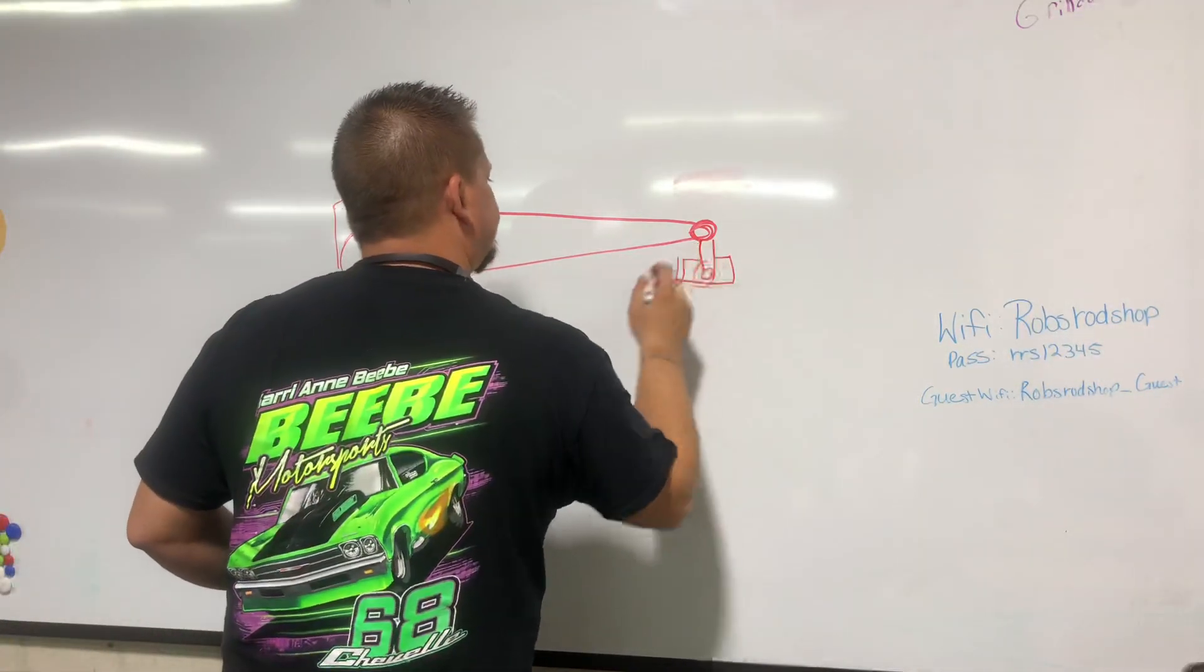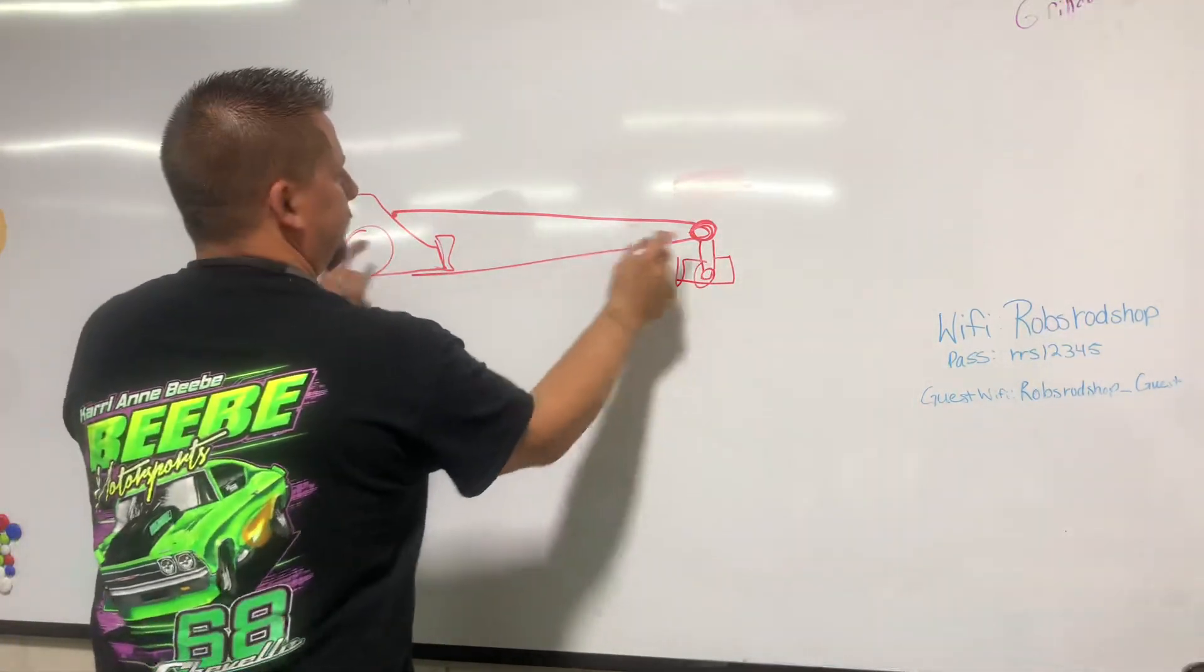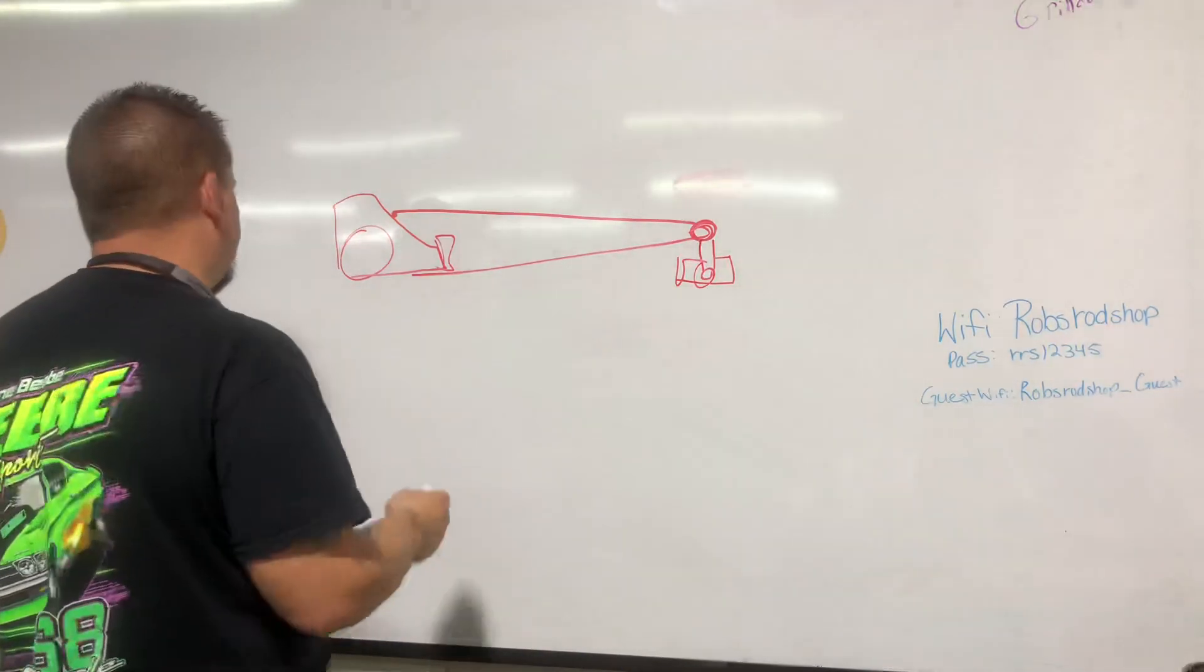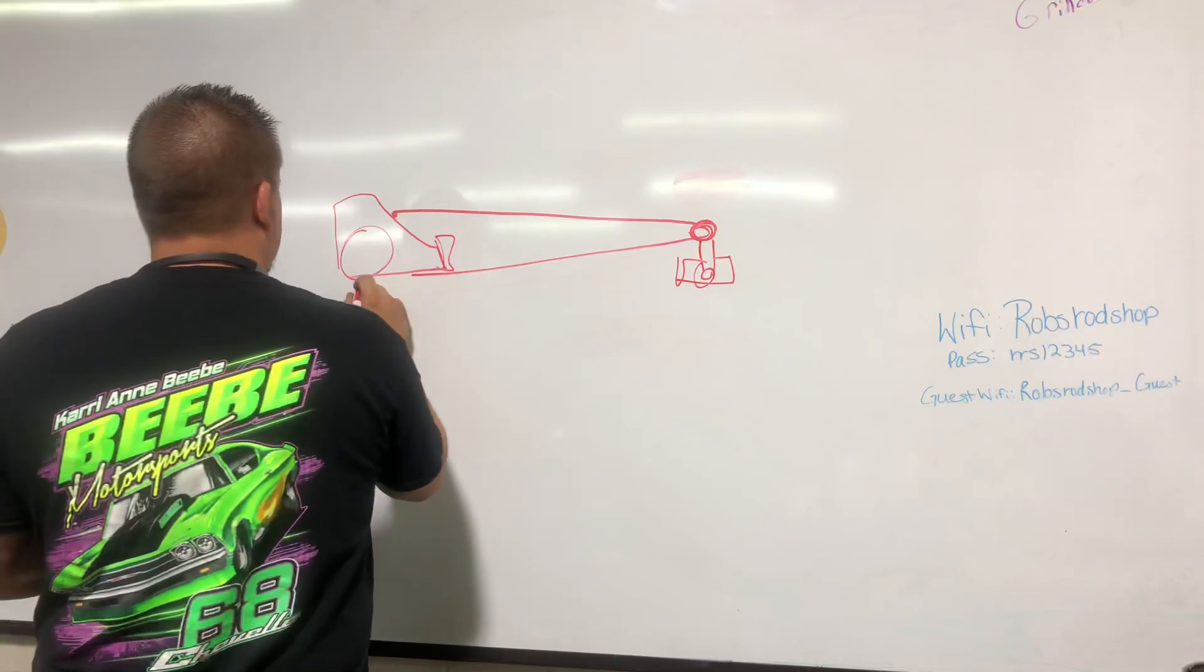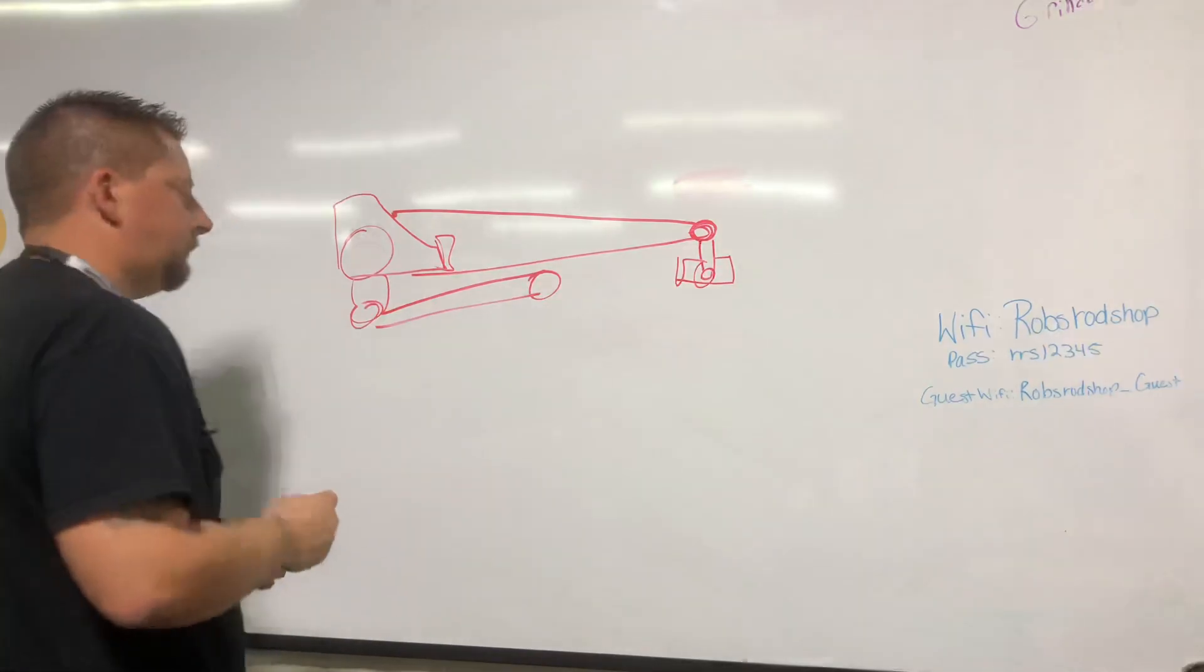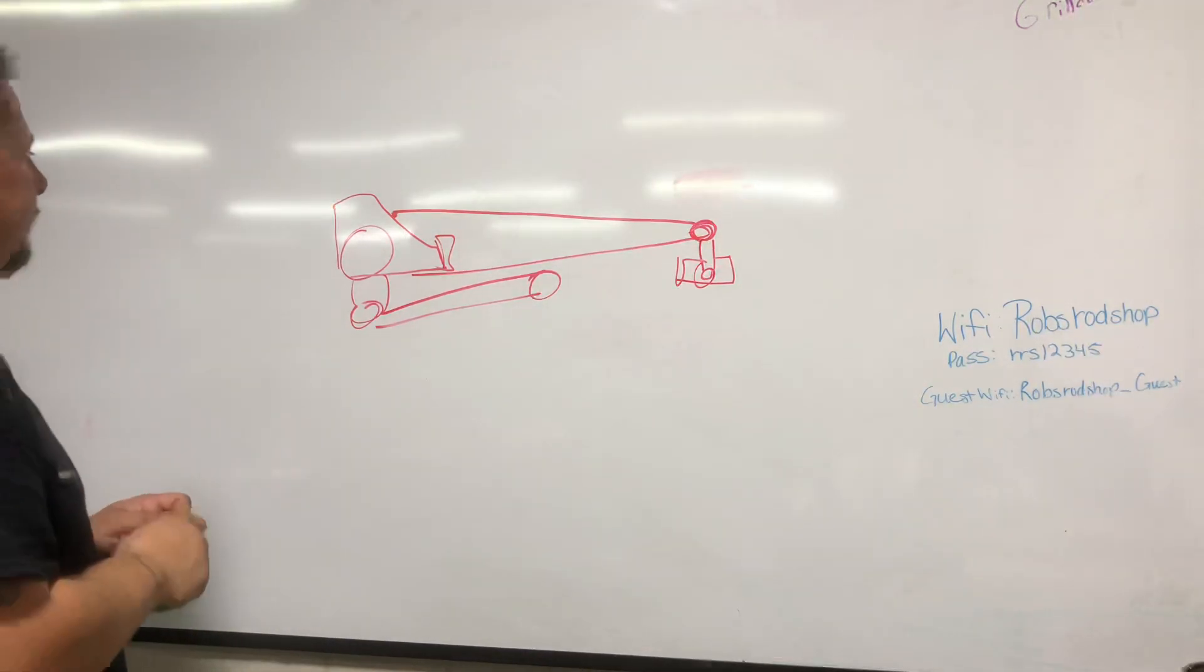So what they do is they put a lower control arm and a track bar in the back. So our lower control arm will go here somewhere and then it goes up to the chassis and ties in. Now what generally happens here is, because the torque is distributed out here, it gives a little leverage on the rear end whenever you go to leave.